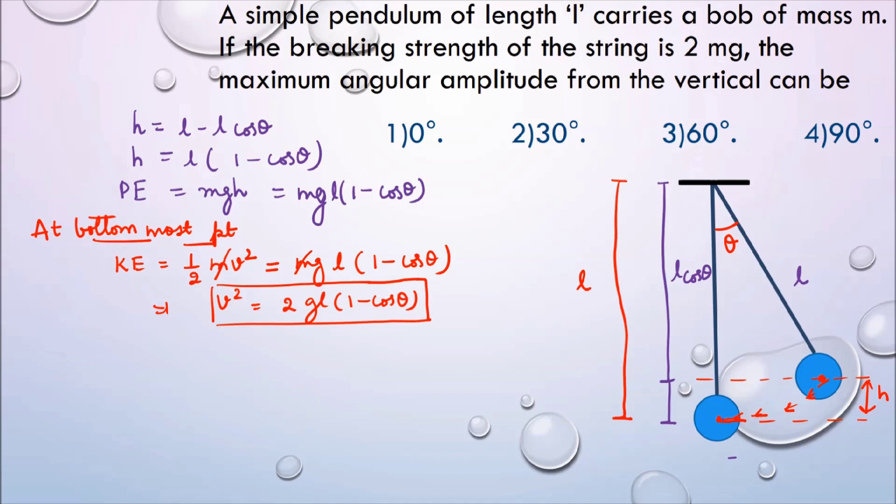Now let's go to the next important terms. Now, the question says the breaking strength of the string is 2 mg. That means the maximum force that can be given to the string is 2 mg. So where is this string going to experience maximum tension? The string is going to experience maximum tension at the bottom most position. And why it is experiencing maximum tension there?